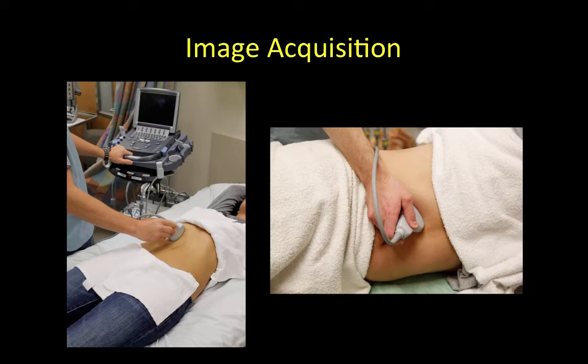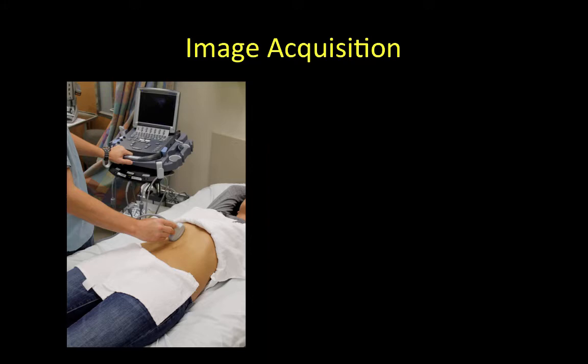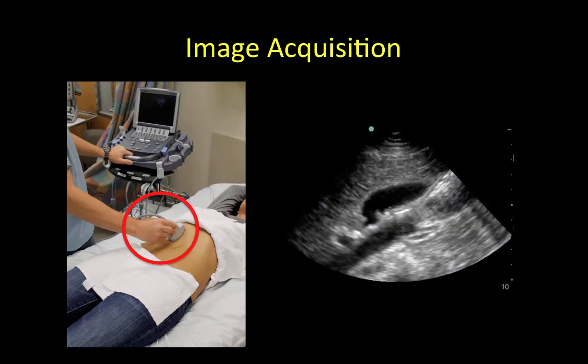Start by placing the transducer along the inferior border of the costal margin on the patient's right side with the transducer marker pointing towards the patient's head, angling the transducer slightly cephalad. Next, slide the transducer laterally and inferiorly along the costal margin until the gallbladder comes into view. The gallbladder will appear as a hypoechoic, oblong, or circular structure.